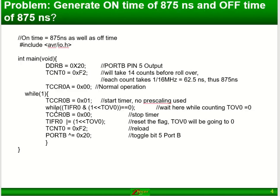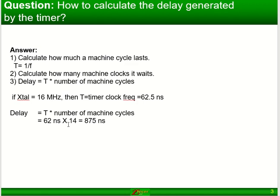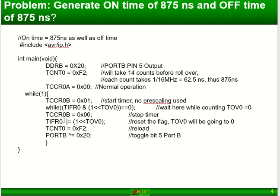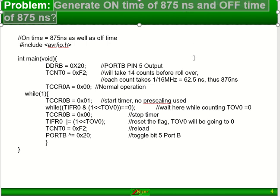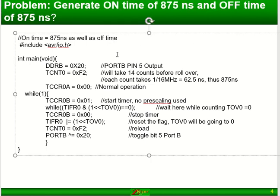In this specific case, because I know 14 machine cycles gives 875 nanoseconds delay, I've written a program. I want to generate an on time of 875 nanoseconds and also an off time of 875 nanoseconds. That's my request in this specific program.